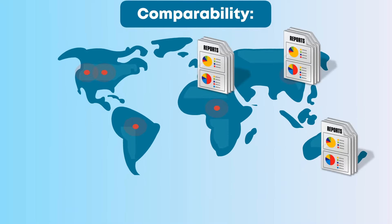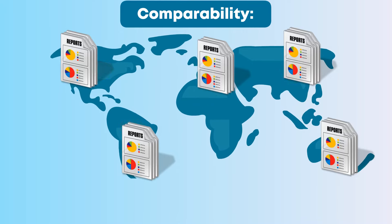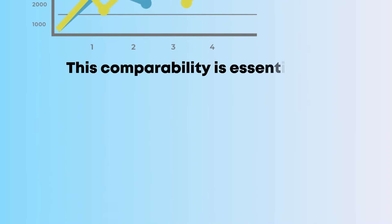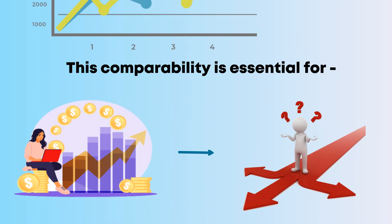Comparability: GAAP promotes uniformity in financial reporting, making it easier for users to compare the financial performance of different companies. This comparability is essential for investors seeking to make informed investment decisions.